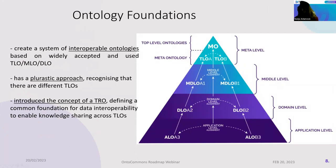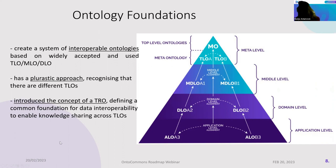Regarding ontology foundation, within OntoCommons we had the target to develop a system with interoperable ontologies based on different levels — top level, middle level, and domain level. These ontologies' interoperability should be within the same domains but also across domains. We have a pluralistic approach, meaning we did not pre-select one specific top-level ontology, but included several widely accepted top-level ontologies. We also introduced the concept of a top reference ontology that should support harmonization and alignment between different top-level ontologies.